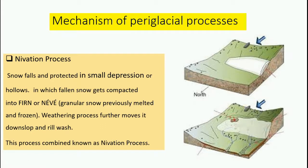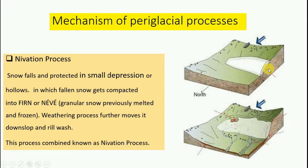The next mechanism is the nivation process, which is a combination of various processes that happen on the land. First, snow falls and is protected in small depressions or hollows, called nivation hollows. In the second step, the fallen snow gets compacted into firn or névé — granular snow previously melted and refrozen — and it accumulates in these same nivation hollows.